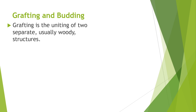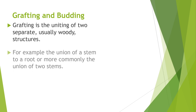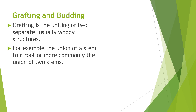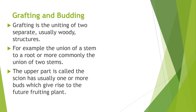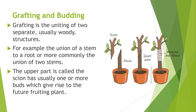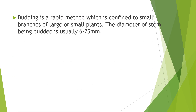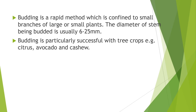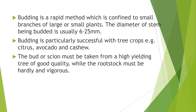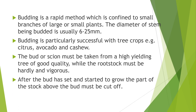Grafting is the uniting of two separate, usually woody, structures — for example, the union of a stem to a root, or more commonly the union of two stems. The upper part is called the scion and usually has one or more buds which give rise to the future fruiting plant. Budding is a rapid method confined to small branches of large or small plants; the diameter of stem being budded is usually 6 to 25 mm. Budding is particularly successful with tree crops such as citrus, avocado, and cashew. The bud or scion must be taken from a high-yielding tree of good quality, while the root stock must be hardy and vigorous. After the bud has set and started to grow, the part of the stalk above the bud must be cut off.